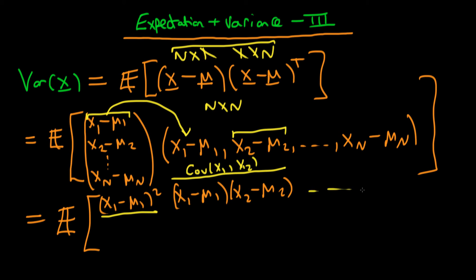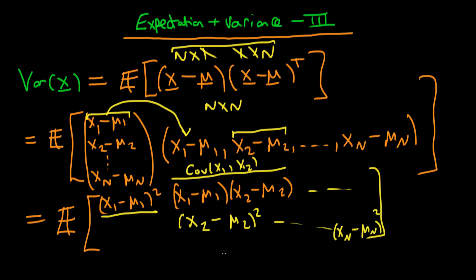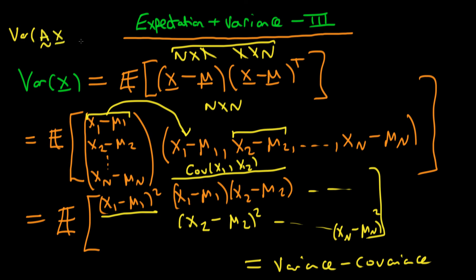Continuing for further elements, each diagonal element gives the variance of the corresponding component — for example, (x2 minus mu2) squared gives the variance of x2 — all the way through to (xn minus mu_n) squared, which is the variance of xn. So we've proved that this definition does add up to the variance-covariance matrix defined in the last video. In the next video I'll complete our discussion by explaining what the variance of a constant matrix A times a random vector x is equal to.